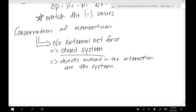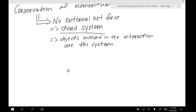When dealing with conservation of momentum, we usually want the objects involved in the interaction to be the system. If we have two cars colliding, we should use the two cars as the system. Because if we just pick one of the cars, then the force from one car on the other is now external, and we can't have conservation of momentum for a single object. For conservation of momentum, we need two objects in our system.